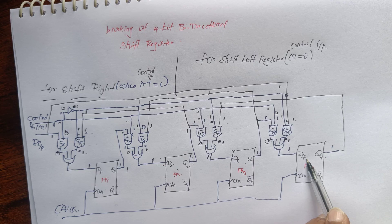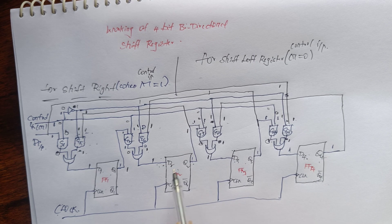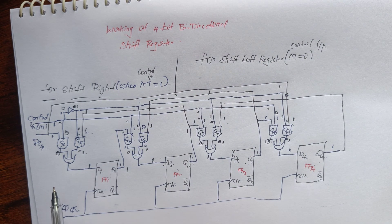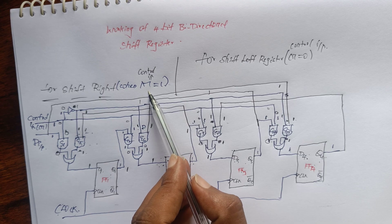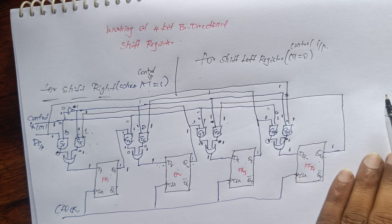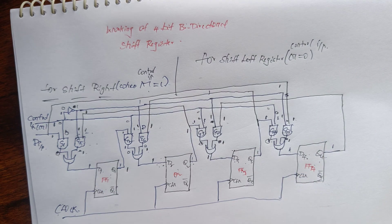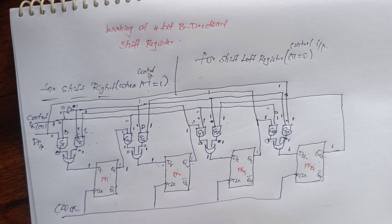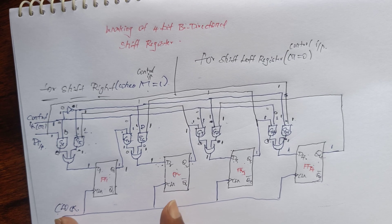You can observe that data started at the right side and is moving towards the left side. The entire register works as a shift left register whenever the control input equals zero, and as a shift right register whenever the control input equals one. Step by step, the diagram is straightforward. Please like and follow on the YouTube channel.